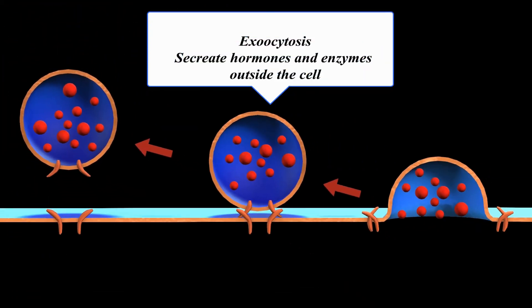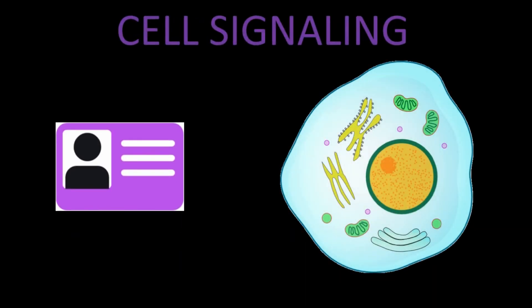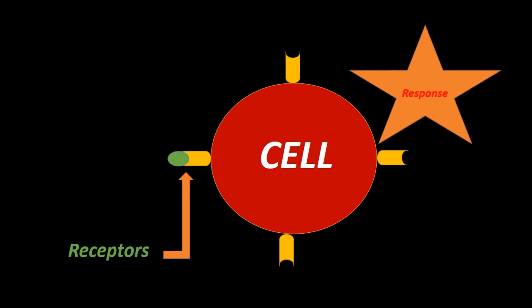Every cell in the body has an ID card represented in cell membrane receptors. These receptors, made of proteins or carbohydrates, help the body recognize its cells and help hormones and other cells to act on the cell to produce specific responses.